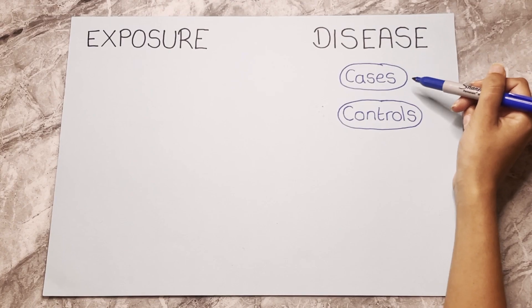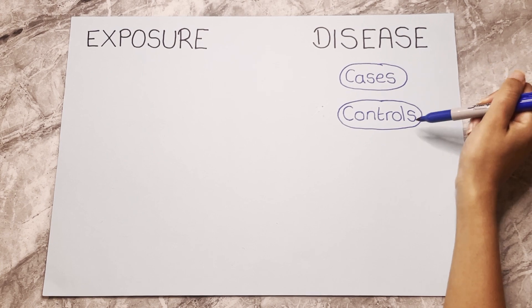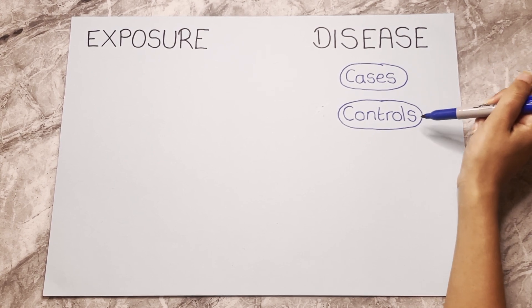In a case control study we start with two groups: the cases and the controls. Cases are people with a particular disease and the controls are a group of people without the disease but who are similar in every other way to the cases group.